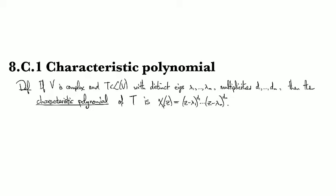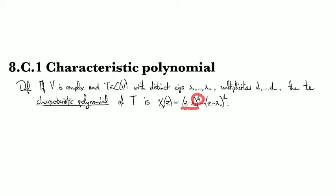Then the characteristic polynomial is going to be the product of these factors z minus eigenvalue raised to the multiplicity, and then we multiply together all of those terms for the different eigenvalues.